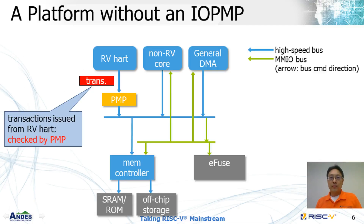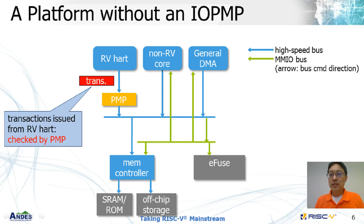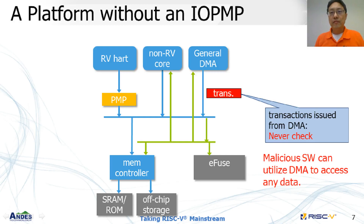Let's see an example. This slide depicts a platform that doesn't have any IOPMP. Here, we have a high-speed bus in blue and MMIO bus in green. The direction of the arrow indicates the command direction of the bus. We can see when a transaction issued from a RISC-V core can be checked by a PMP. In the same platform, a transaction issued from a DMA can reach any memory or any device without limitation, because no one can check or limit this transaction. Therefore, a malicious software may utilize this weakness to compromise the whole system.